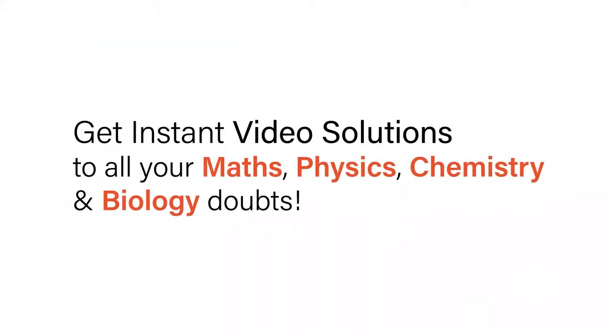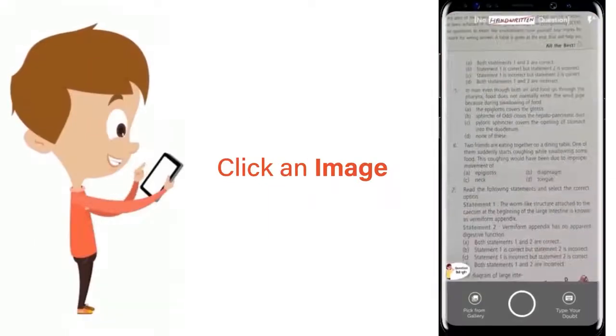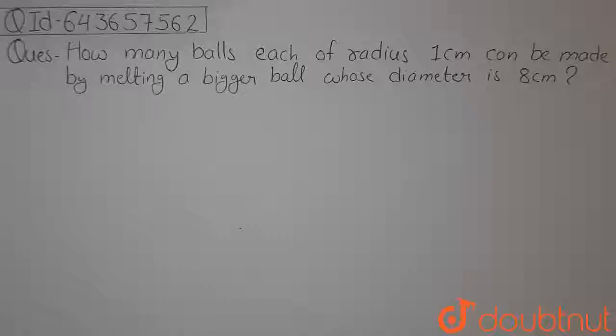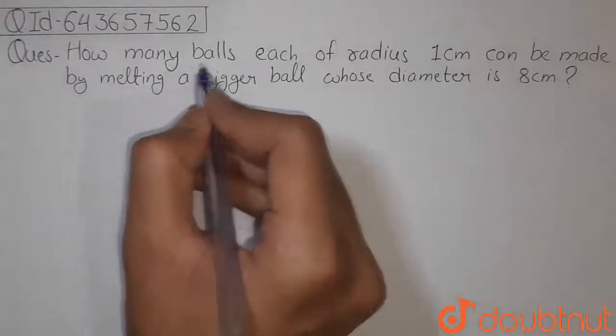With DoubtNet, get instant video solutions to all your math, physics, chemistry, and biology doubts. Just click the image of the question, crop the question, and get instant video solution. Download DoubtNet app today. The question is: how many balls each of radius 1 centimeter can be made by melting a bigger ball whose diameter is 8 centimeters?